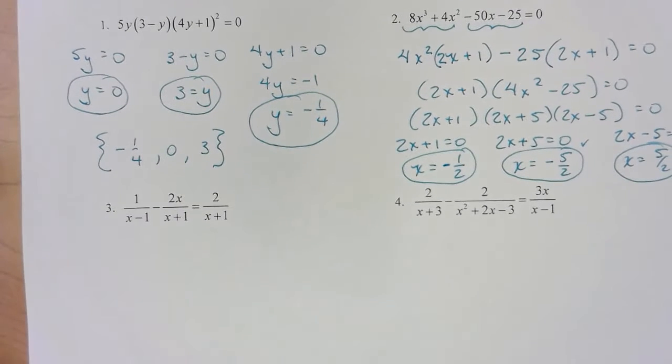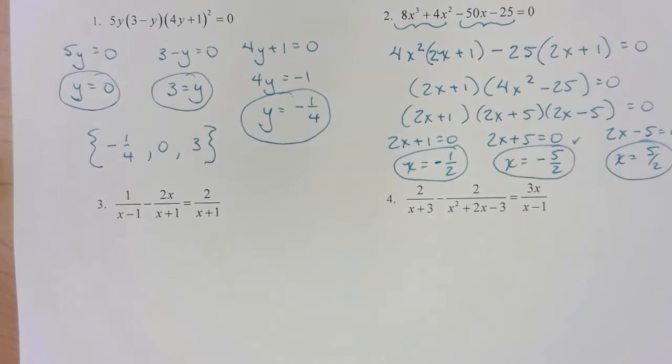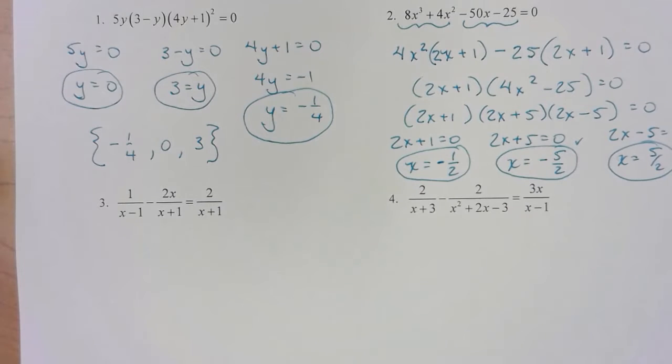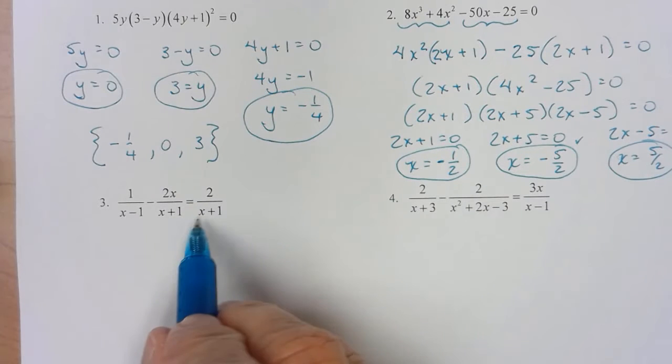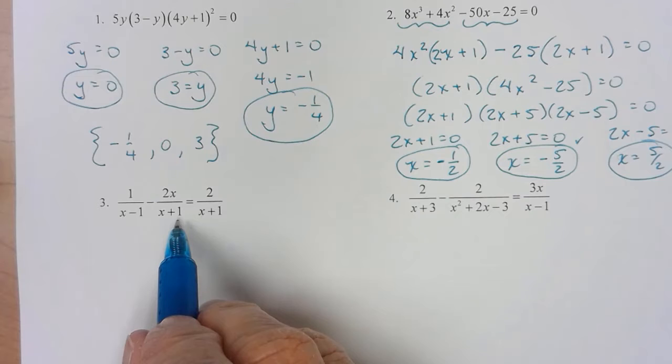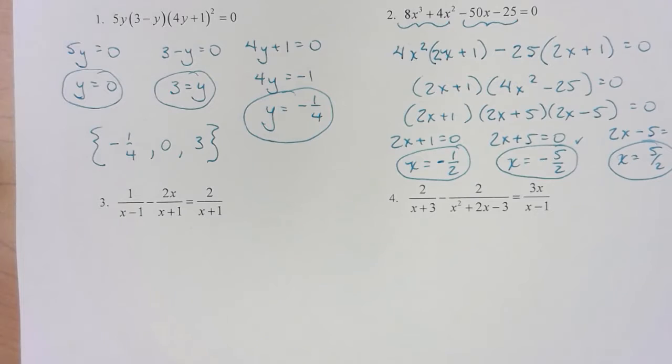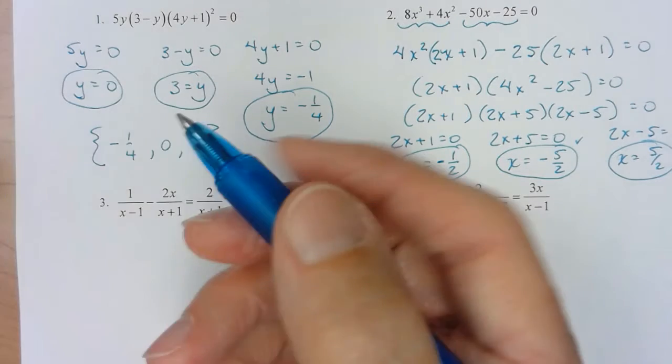All right. Now 3 and 4, I have got fractions. I've got to clean them out. And the way to clean out fractions is to multiply by the least common denominator. Now I cannot factor any of these.